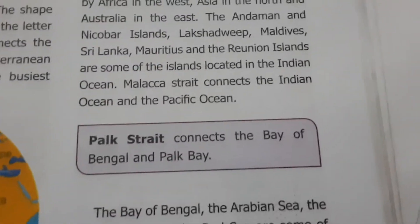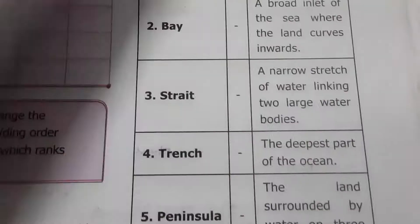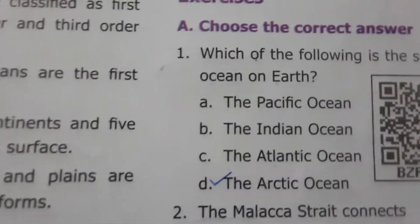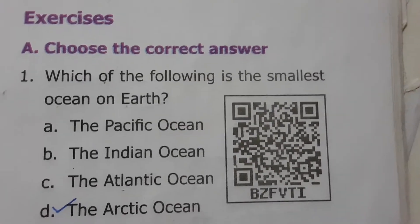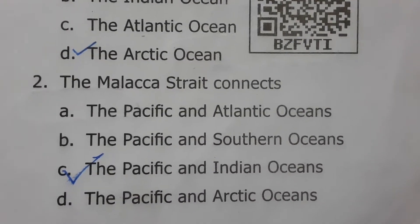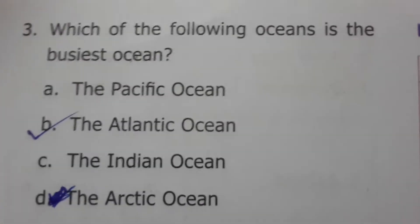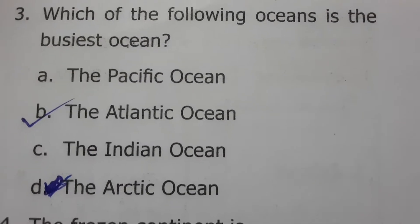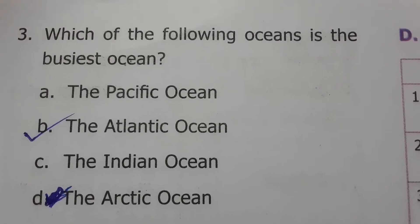The Palk Strait connects the Bay of Bengal. Now let's see the book back evaluations. Which of the following is the smallest ocean on Earth? The answer is the Arctic Ocean. The Malacca Strait connects the Pacific and Indian Oceans. Which of the following oceans is the busiest? The Atlantic Ocean, because most ships use this ocean.